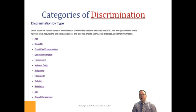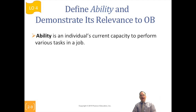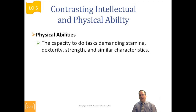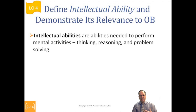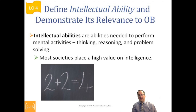When talking about discrimination and job performance, we want to look at two broad categories of ability. Ability is the individual's capacity to perform — can they do their job? It comes in two types: physical abilities, such as strength, coordination, dexterity, and balance; and intellectual abilities — the capacity to think, reason, and think critically. Most societies place high value on intelligence: all other things being equal, smarter beats dumber.